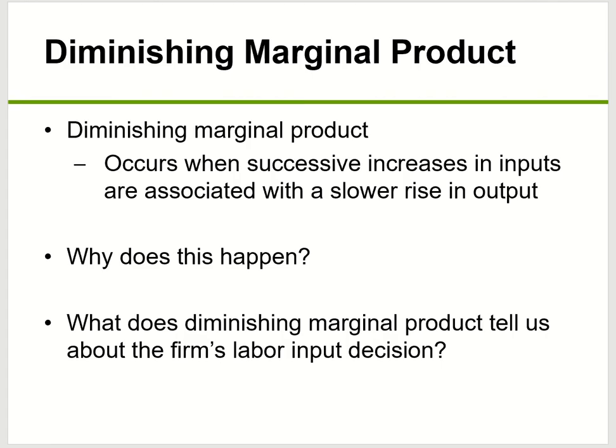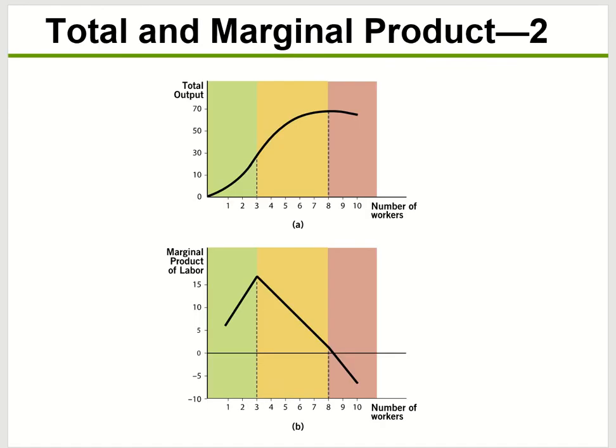Know a concept called diminishing marginal product. This happens when you have more input — you put in more resources but you're producing at a slower rate. If you look at that on the graph, this portion here is the diminishing marginal product.